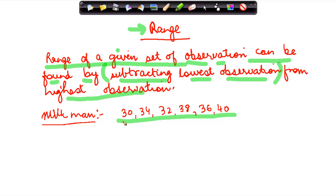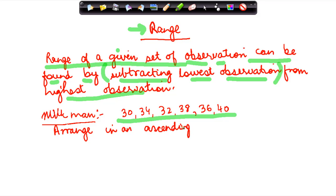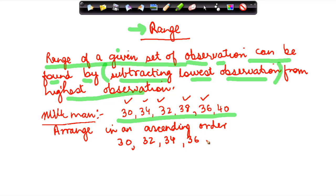In my example, my observations are these. But many times it's difficult to find out which is the smallest and which is the highest, because these are all jumbled up. So the first thing one needs to do is arrange them in ascending order — that is, in increasing order. The lowest number is 30, then 32, then 34, and so on. These are my various observations written down in ascending order.